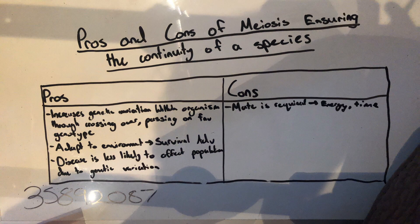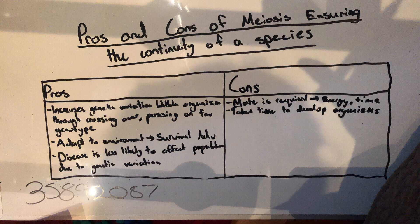Cons: a mate is required for meiosis, therefore making meiosis timely and energy costly. It takes time to develop organisms through meiosis.